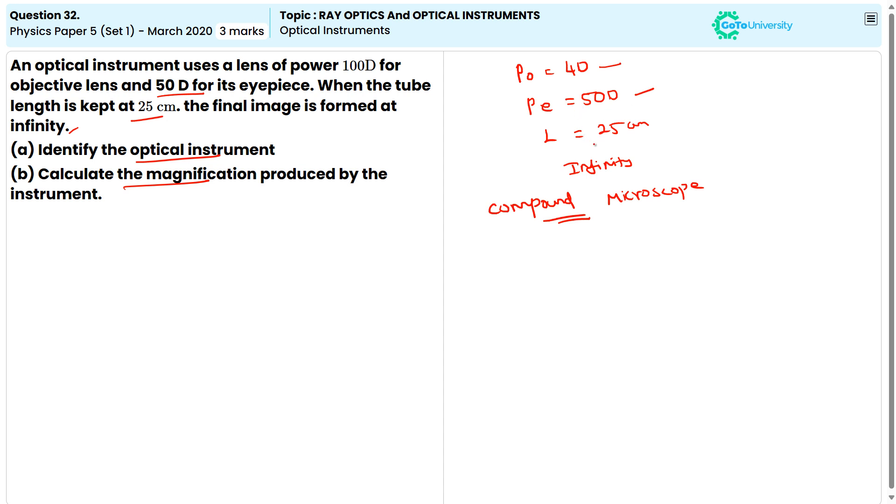Then, second case, the tube length refers to the distance between the objective lens and the eyepiece. So, the image is formed at infinity, which indicates that the microscope is set for relaxed viewing. So, first we can say that the instrument used is compound microscope.